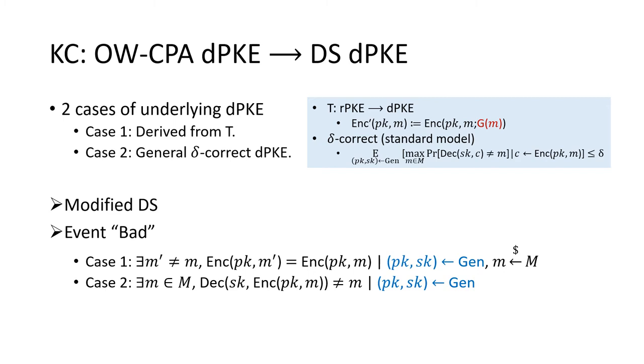In the first case, we define it that for a randomly chosen message, there exists another message such that they map to the same ciphertext. In the second case, we define it that there are some messages that can cause decryption error.